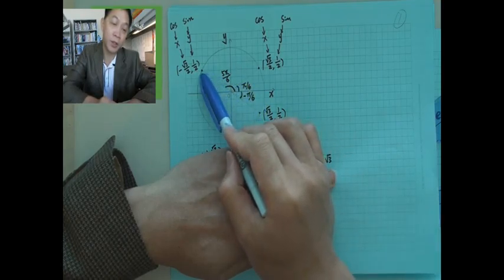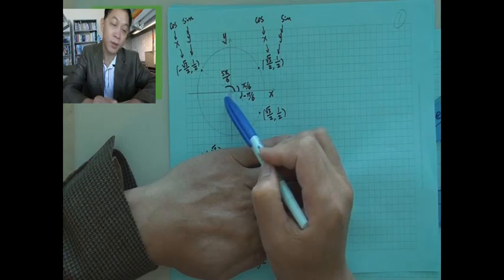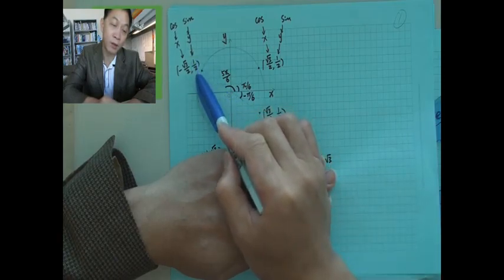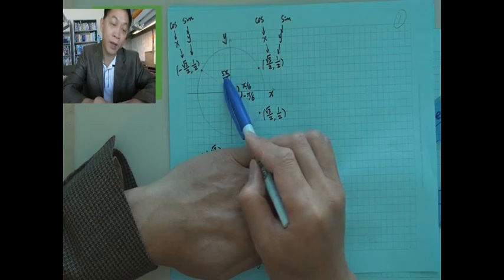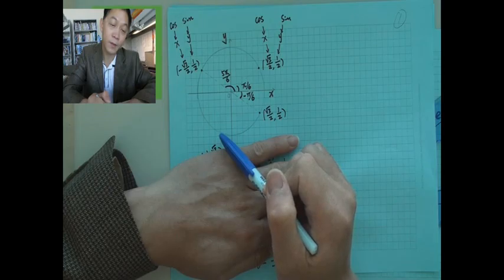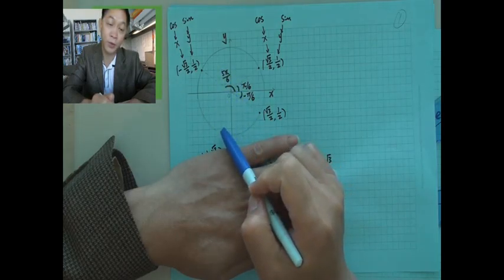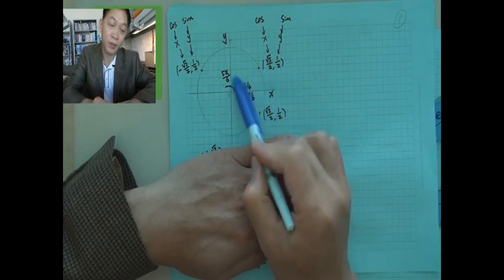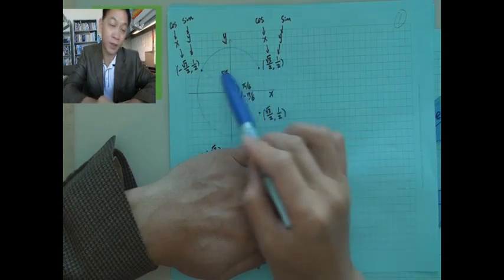But if you look at this other point, its reference angle is also pi over 6, and the y-coordinate is also one-half. So there is another solution: 5 pi over 6. One is pi over 6, another is 5 pi over 6, because they have the same y-coordinate. The y-coordinate is sine.